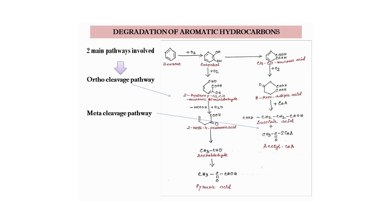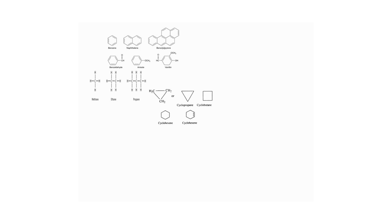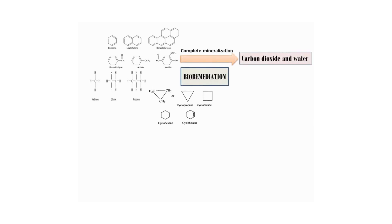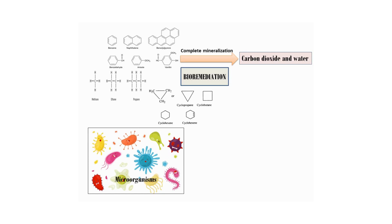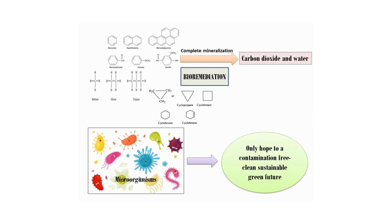Thus, complete mineralization of the hydrocarbon takes place without generation of any toxic byproducts. We can conclude that hydrocarbons contaminating the environment from oil spills and other contaminated sites — such as benzene, naphthalene, cyclopropane, cyclobutane, methane, and ethane — can be completely mineralized into carbon dioxide and water through the process of bioremediation. Microorganisms are therefore our only hope for a contamination-free, clean, sustainable, and green future.